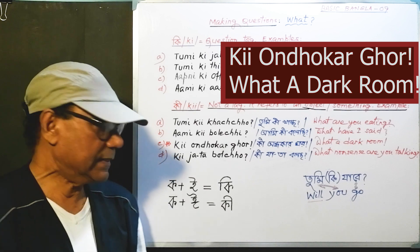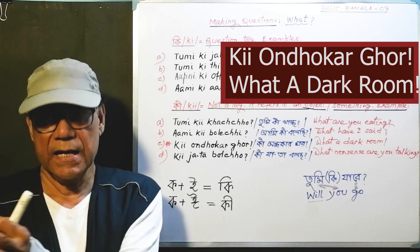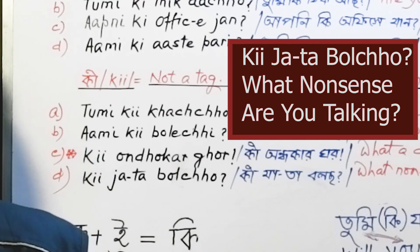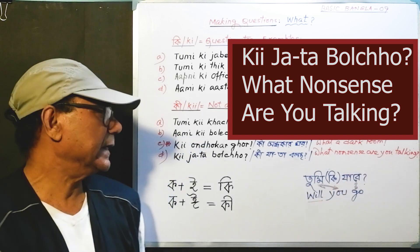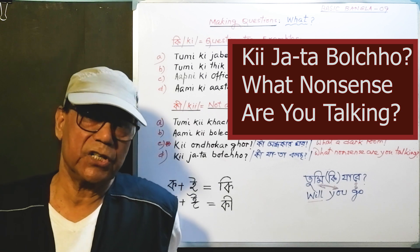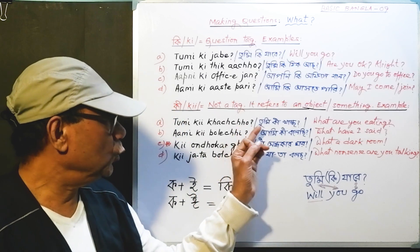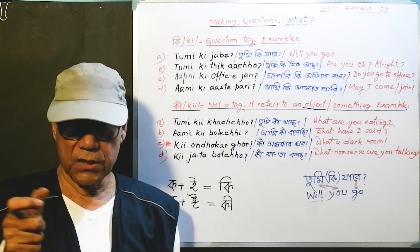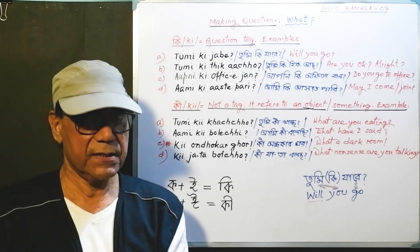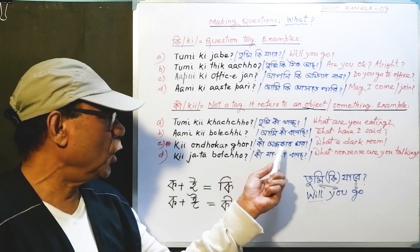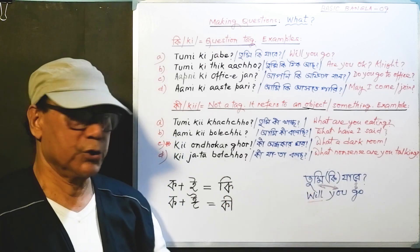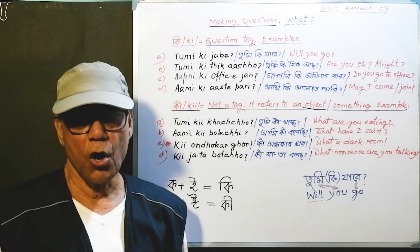Just remember that this stressed ki has other functions too. Fourth example: 'ki jata bolachi?' — 'what nonsense are you talking?' or 'what rubbish are you talking?' Once again: 'tumi ki khatsho' — what are you eating? 'Ami ki bolachi?' — what have I said? 'Ki andhaar ghor!' — what a dark room! 'Ki jata bolachi?' — what nonsense are you talking?